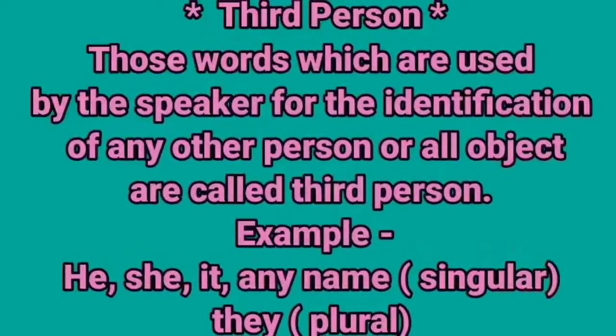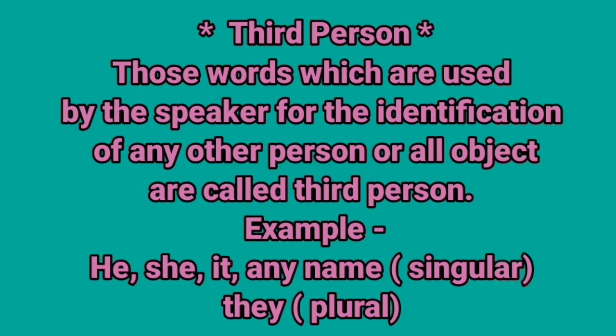Third person — those words which are used by the speaker for the identification of any other person, object, or thing are called third person. For example, any name, he, she, it (singular number), and plural number: they. Third person kisay kahinge? Jiske baare mein kuch kaha ya suna jaye, usay third person kahinge.